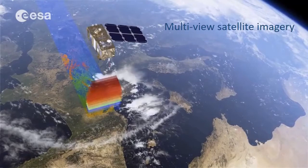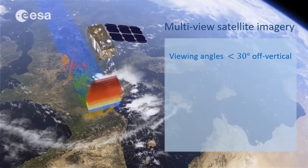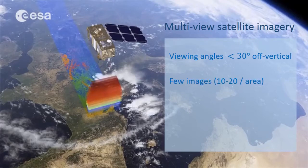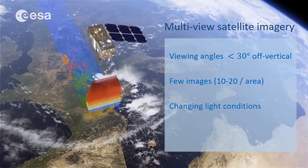Here are a few of the key differences between our case study and on-ground computer vision applications. First of all, we only have access to images with an off vertical angle smaller than 30 degrees. We also have relatively few images of each scene. Finally, the lighting conditions are different in each image because the sun is never exactly in the same position when the satellite passes by.